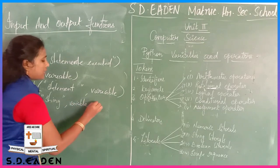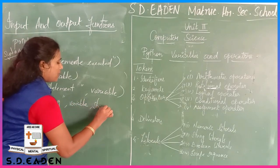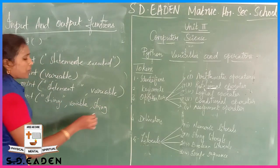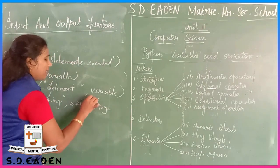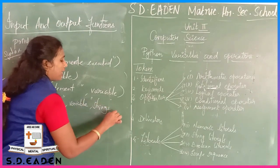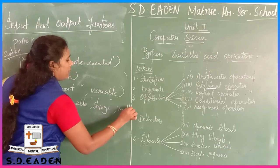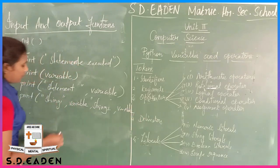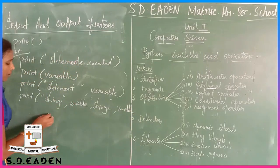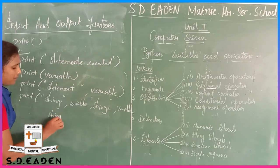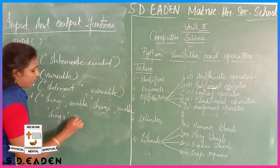This is the third type, fourth type. This is a string function, string, next variable. Next string, next string, variable, variable two - more than one variable, next string.